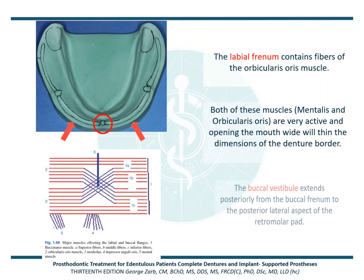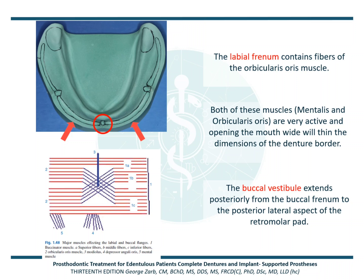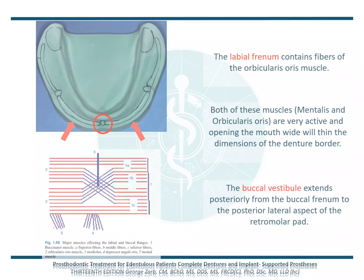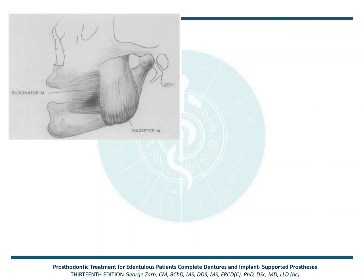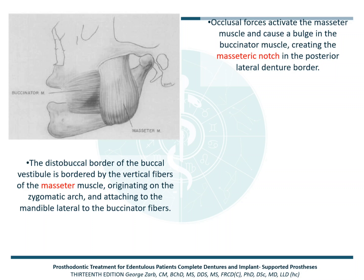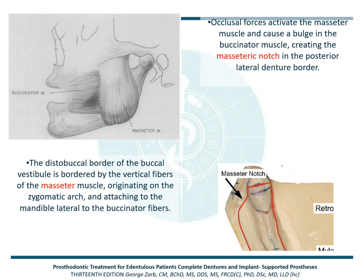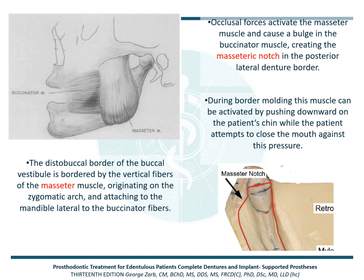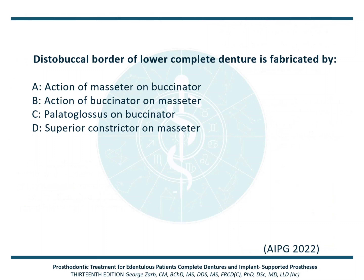The buccal vestibule extends posteriorly from the buccal frenum to the posterior lateral aspect of the retromolar pad. The distobuccal border of the buccal vestibule is bordered by the vertical fibers of the masseter muscle, which originates on the zygomatic arch and attaches to the mandible lateral to the buccinator fibers. Occlusal forces activate the masseter muscle and cause a bulge in the buccinator muscle, creating the characteristic masseteric notch in the posterior lateral denture border. During border molding, this muscle can be activated by pushing downward on the patient's chin while the patient attempts to close the mouth against pressure. This question was asked in AIPG 2022: The distobuccal border of the lower complete denture is fabricated by — the correct answer is A, action of masseter on the buccinator muscle.